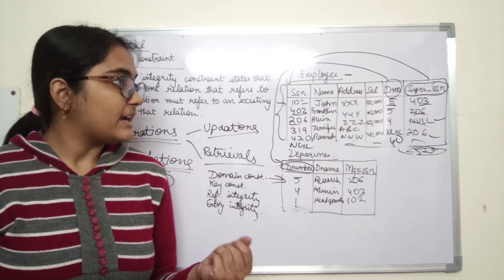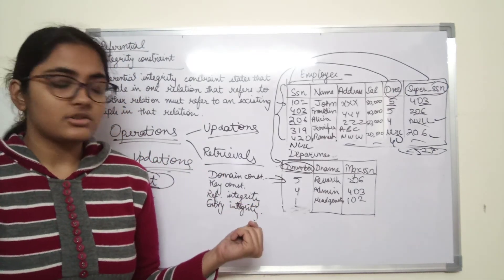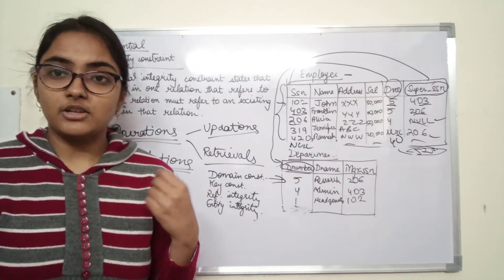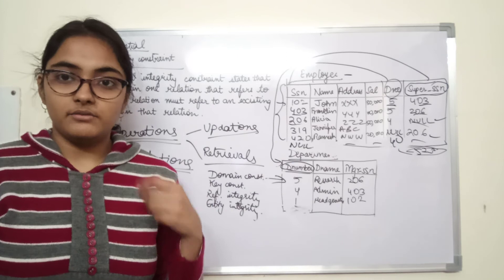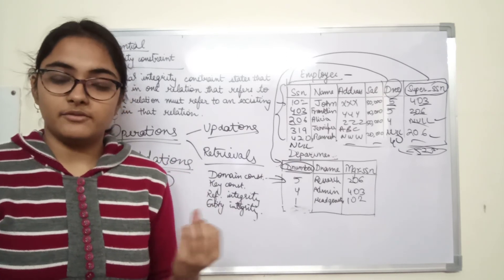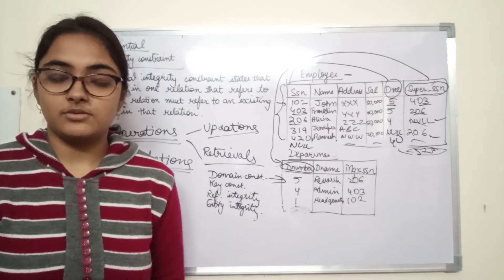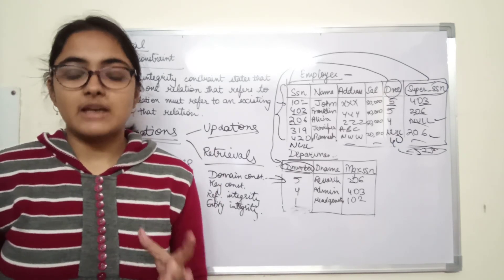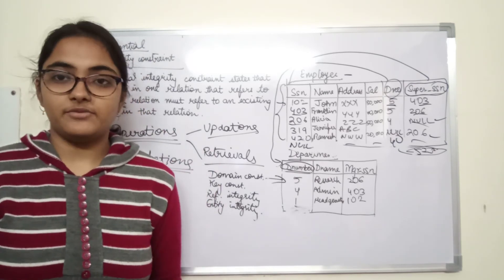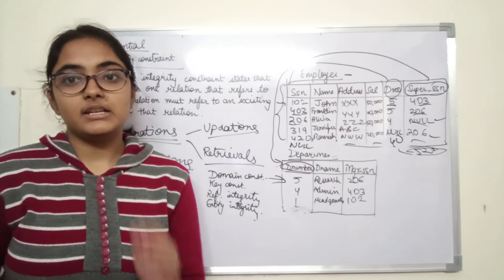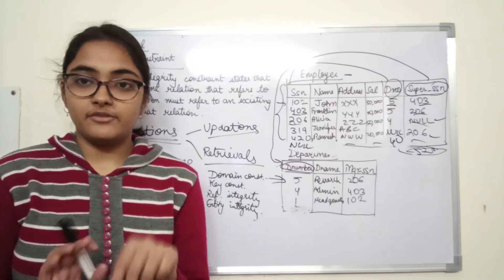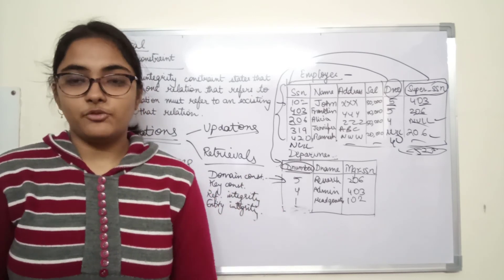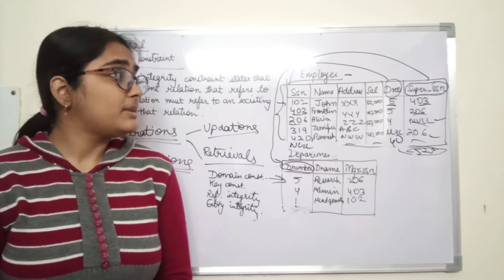For deletion and modification, we will see in the next video what options to adopt when they lead to violation of constraints. With that, chapter five of Navathe's 5th edition will be over. After that, we will learn how to convert from ER to relational model, and then we may move on to normalization.